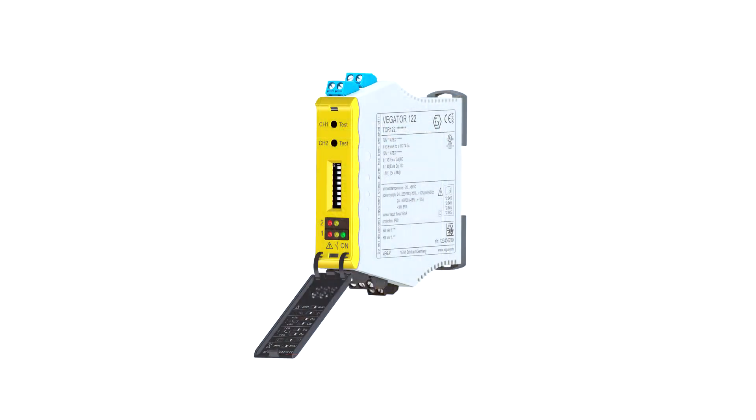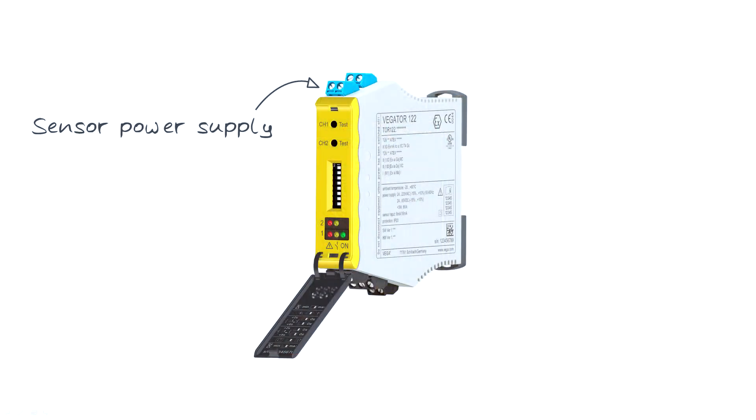First, let's have a look at the task of a signal conditioning instrument. First of all, it supplies the sensor with power, and in case of hazardous areas it can also be used as an Ex separator.